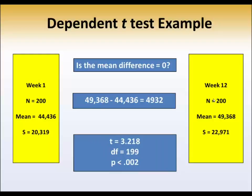When we look at our results, we have a t-test. t is equal to 3.2. Think about where that 3.2 is on the t-distribution. Degrees of freedom are 199. The probability of obtaining the value 4932 differences in steps between week 1 and week 12 is less than two times in a thousand if the null hypothesis is true. So, we would reject the null hypothesis and conclude that there is a difference between week 1 steps and week 12 steps.